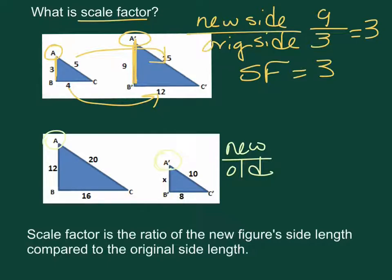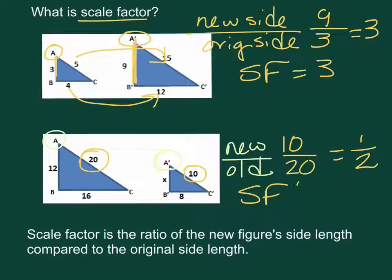On this one our new side is 10, and our original side was 20, which reduces to 1 half. So our scale factor is 1 half.